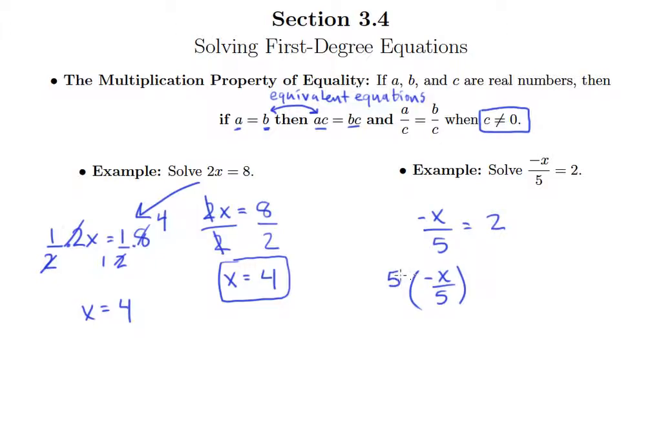So what we might as well do here is go ahead and multiply by a negative 5, because that will allow the 5s to cancel, but then I know a negative times a negative will be a positive. So I'll multiply by negative 5 on the left, negative 5 on the right, and so 5s cancel, and a negative times a negative is positive. So x equals negative 10.